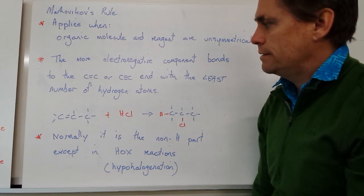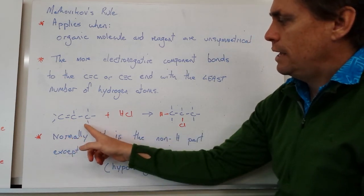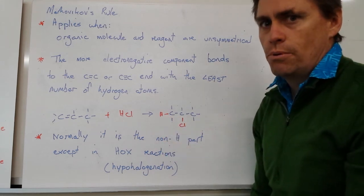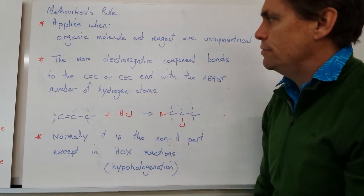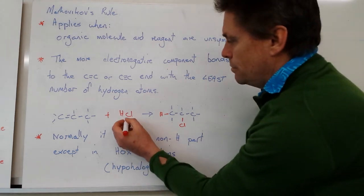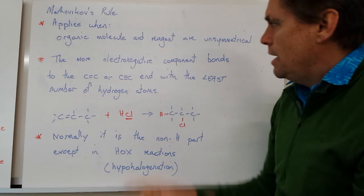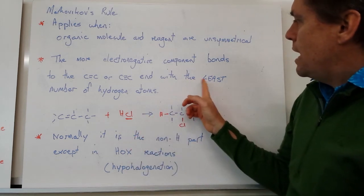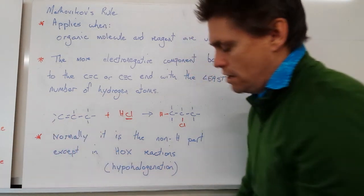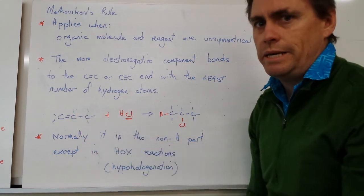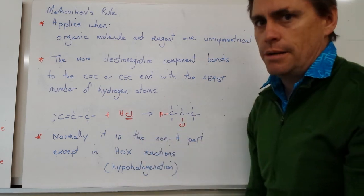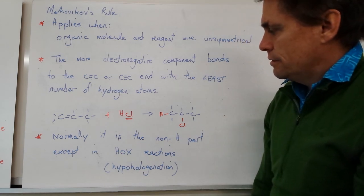Let's look at how we apply that. We have our 1-propene molecule again with hydrogen chloride, and we form the product 2-chloropropane. The more electronegative component is the chlorine atom, and it goes to the carbon with the least number of hydrogens. In this molecule we've got 2 hydrogens on carbon 1 and 1 hydrogen on carbon 2. The least number of hydrogens is on carbon number 2, so that's why the chlorine goes to carbon number 2 and the hydrogen to carbon number 1.